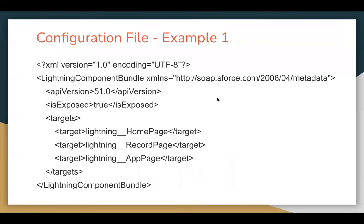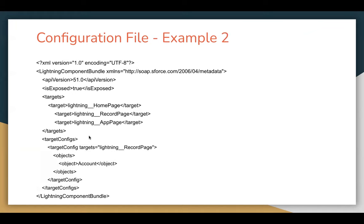Here is an example where isExposed is set to true so you can use your lightning web component in the Salesforce org. The targets listed are home page, record page, and app page. It depends on you which ones you want to use — you can remove any that are not required. You can also place your component on a record page for a specific object only — for example, allowing it only on the Account record page. We will discuss targets and design configuration in detail later.